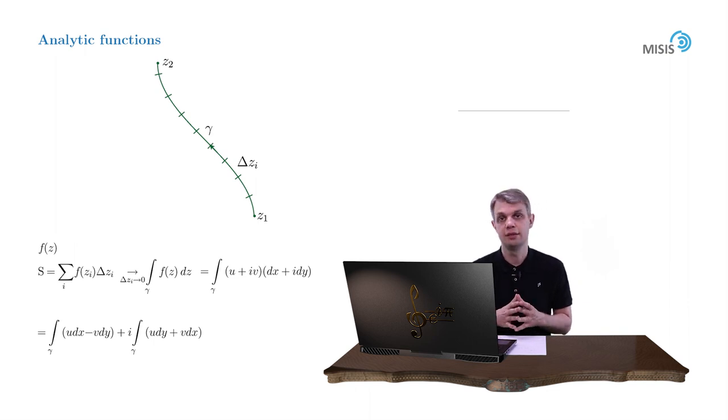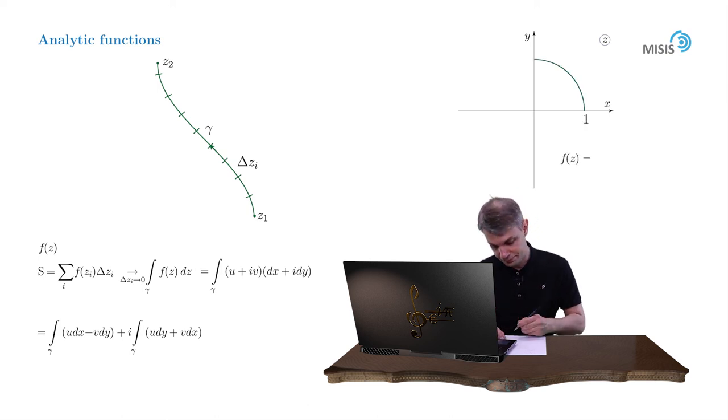And as an example, let's consider an integral along the right upper quarter circle of the function f of z equals z. So u is equal to x while v equals y. And here we go, the integral now